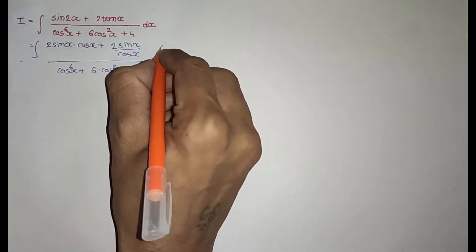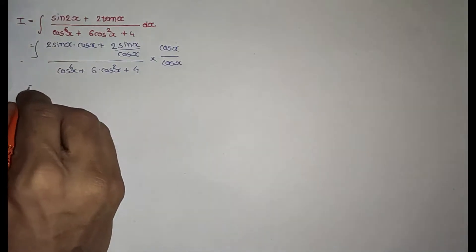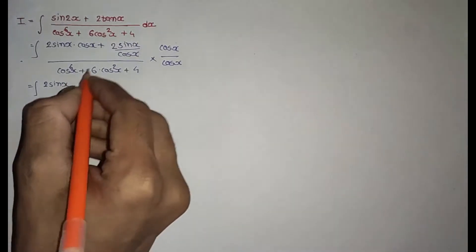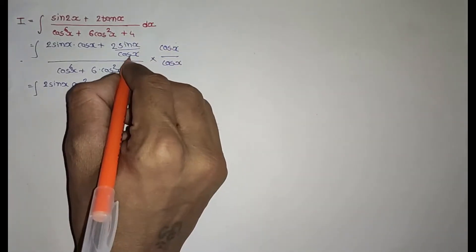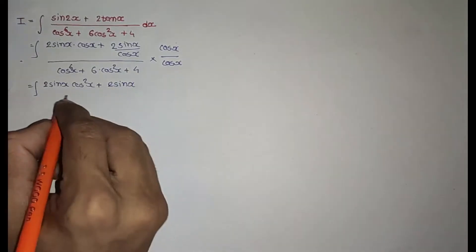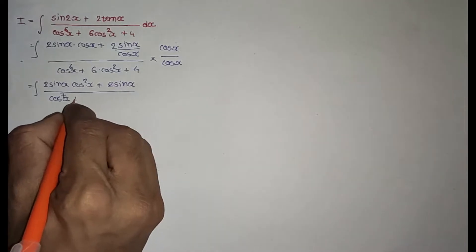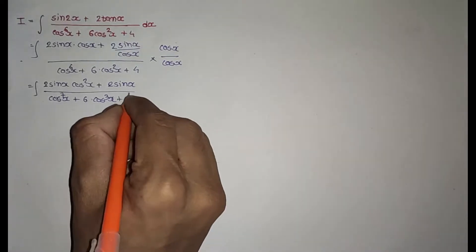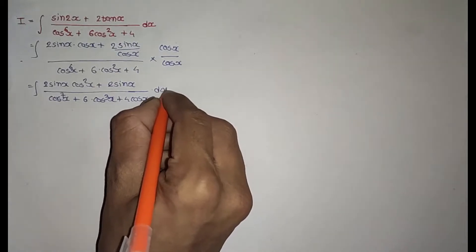I multiply and divide by cos x. So, cos x divided by cos x — integration of 2 sin x cos²x plus the cos terms cancel, leaving 2 sin x divided by (cos^7 x + 6 cos³x + 4 cos x) dx.